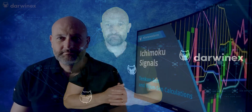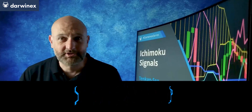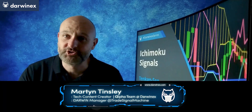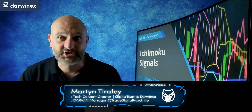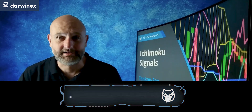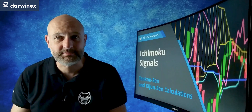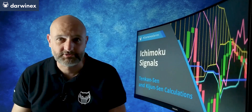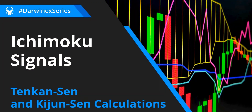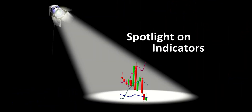Now back to today's tutorial. Today, I look at the calculations behind the Tenkan-sen and the Kijun-sen lines of the Ichimoku indicator. Understanding the rationale behind these is one of the keys to being able to use Ichimoku successfully. Ichimoku is just one of the indicators that I'll be looking at as part of the Spotlight on Indicators video series.